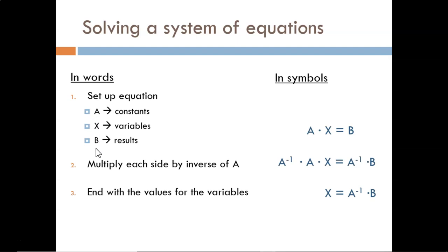A is a matrix of the coefficients being multiplied by the variables. X is a vector that lists the variable names. And B is a vector of the constants on the right side of the equal sign. So, A times X equals B.